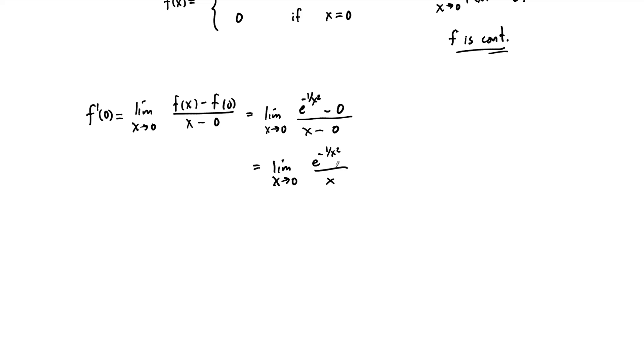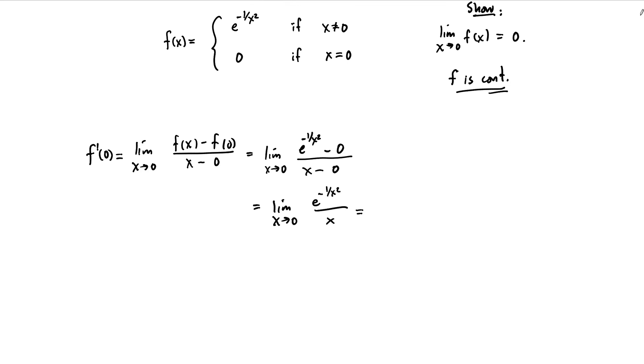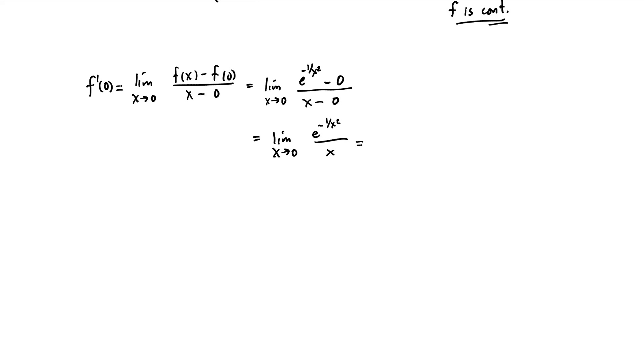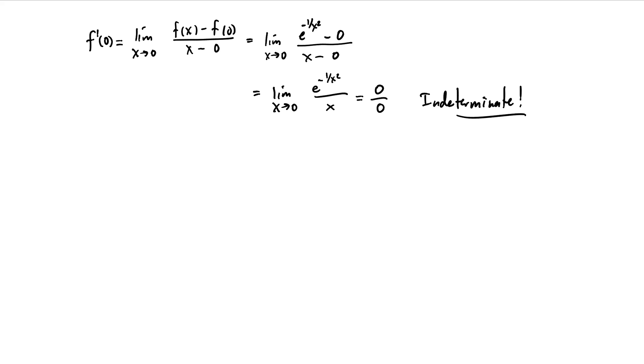And we want to try to compute this limit, so we can just start by plugging in. We just said—you guys are going to show this—but we just said that the limit of this portion here as x approaches 0 is 0, and the limit as x approaches 0 of x itself is 0. And so we see that this is an indeterminate form. We studied these indeterminate forms back in Chapter 6 of our course. So at this point you should be thinking, well, we can apply L'Hopital's Rule.